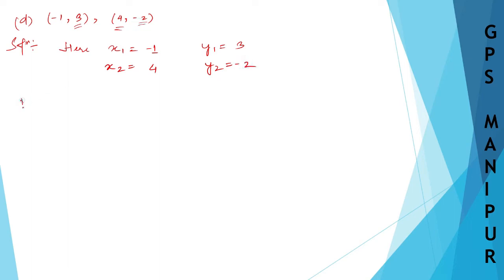So, we know, distance of (x1, y1) from (x2, y2) is root over (x1 - x2) whole square plus (y1 - y2) whole square.